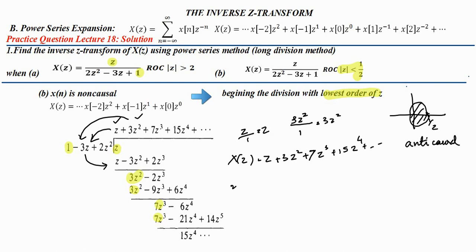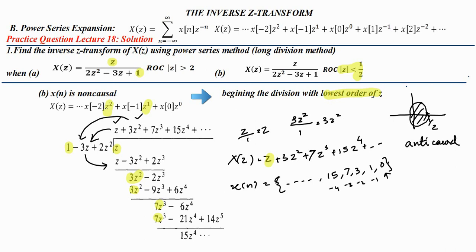After comparing with the signal, it is an anti-causal signal, since it contains powers z raise to 1, z square, etcetera. The sequence going in the negative side is: 15, 7, 3, 1, 0. So x(-1)=1, x(-2)=3, x(-3)=7, x(-4)=15, etcetera. This is the anti-causal signal. Thank you.